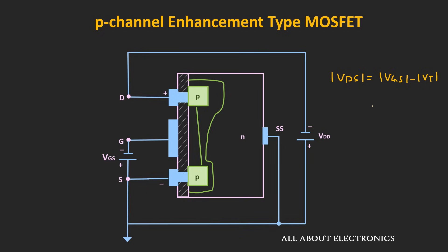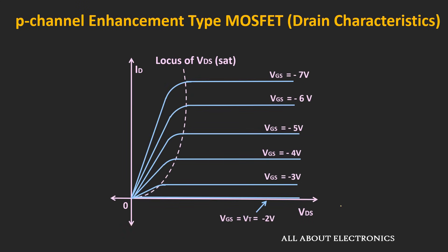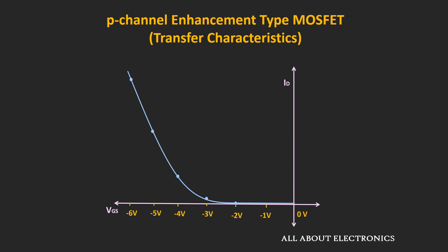For the P-channel MOSFET, the drain or output characteristic looks similar to the N-channel, but the current Id and voltage Vds are both negative, and the drain current flows from the source terminal towards the drain terminal. As Vgs becomes more and more negative, the drain current Id increases. Whenever Vgs is greater than Vt, the MOSFET operates in the cutoff region. The transfer characteristic for the P-channel MOSFET is the mirror image of the N-channel MOSFET.